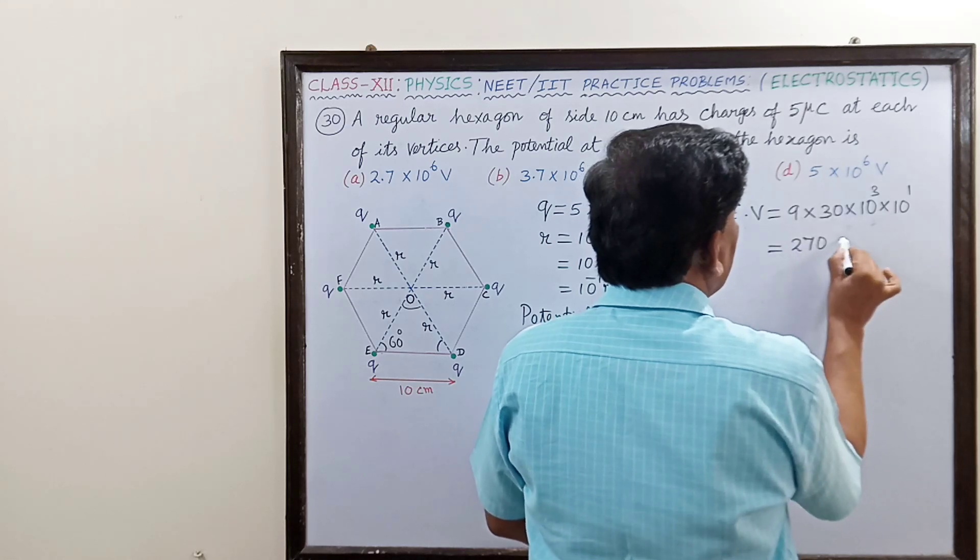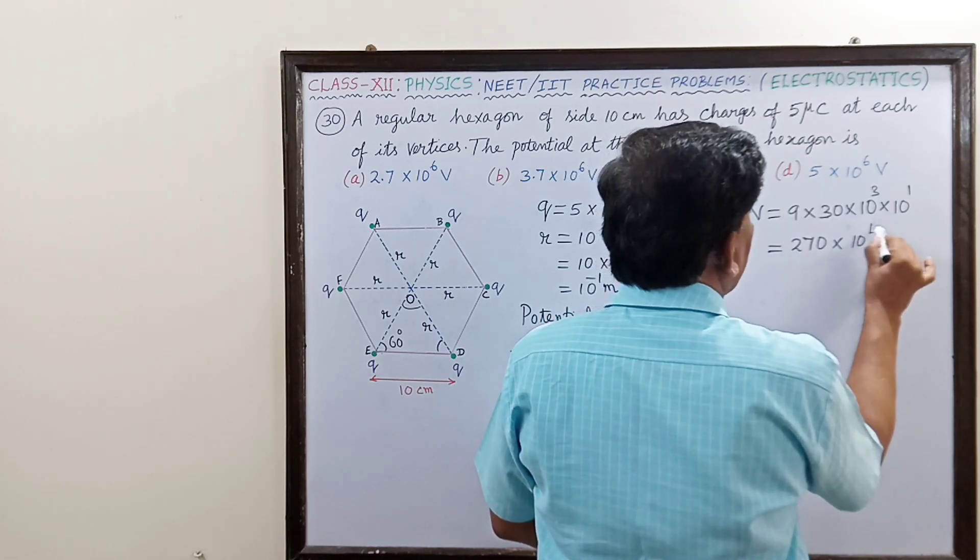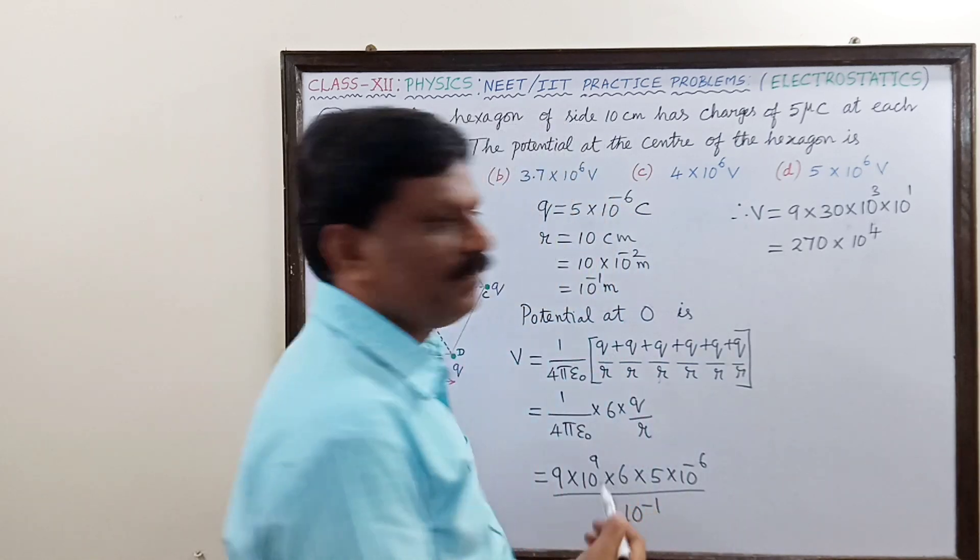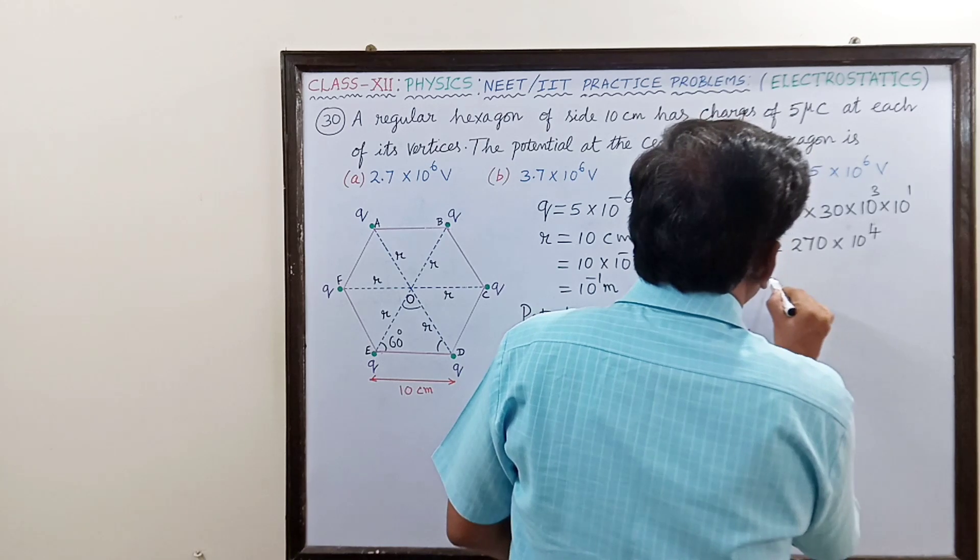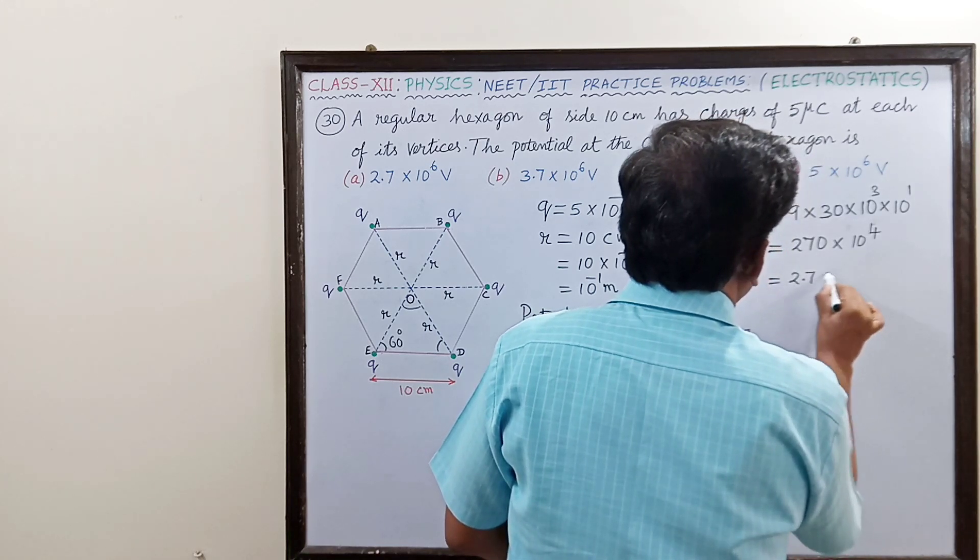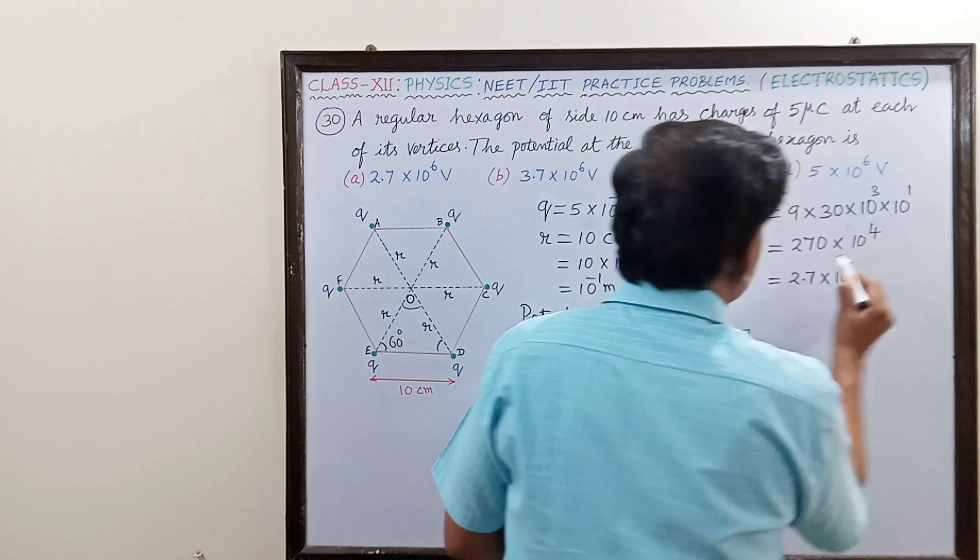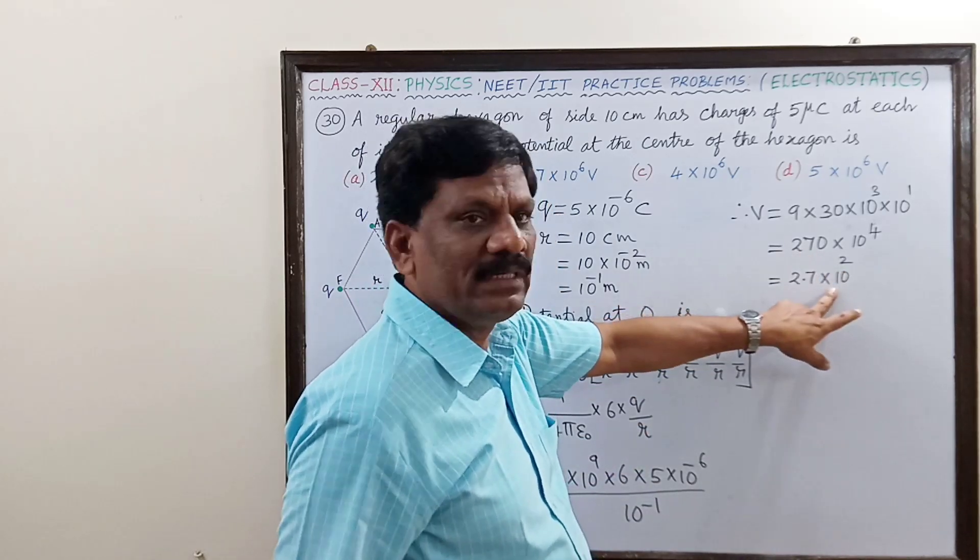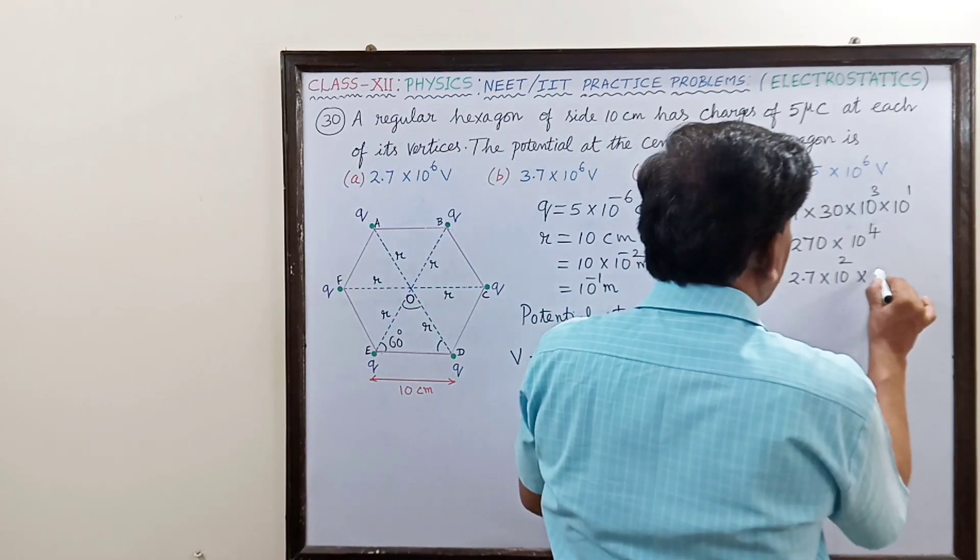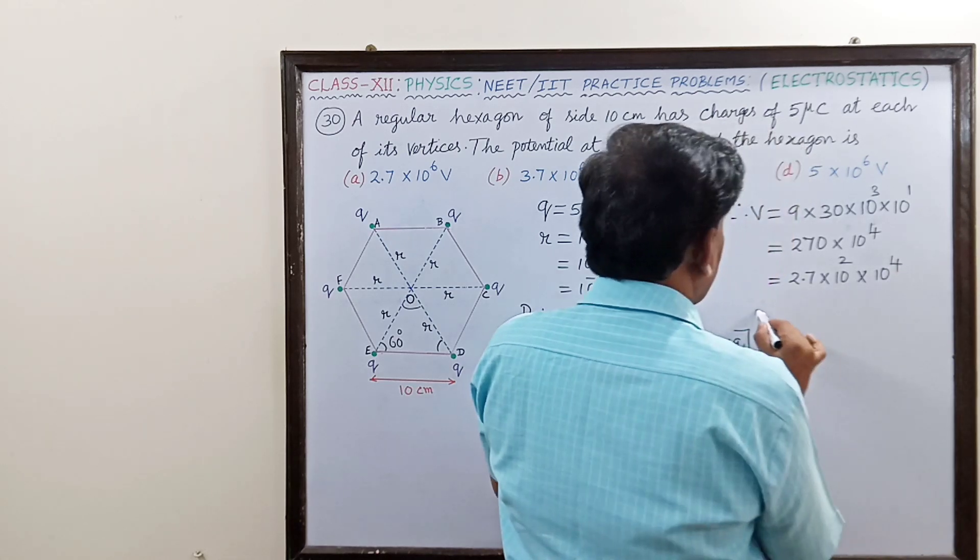So this is 9 into 3 is 27, so this is 270 into 10 to the power of 4. Now this also can be written as 2.7 into 10 square. 270 can be broken as 2.7 into 10 square into 10 power 4.